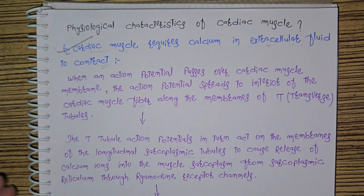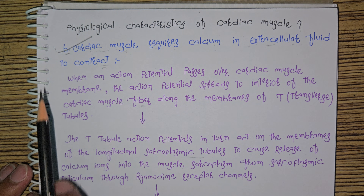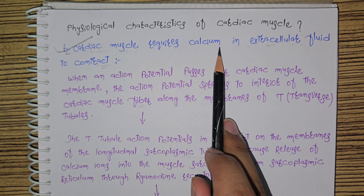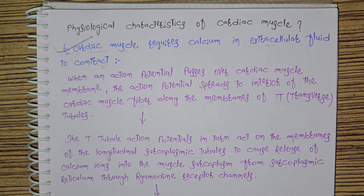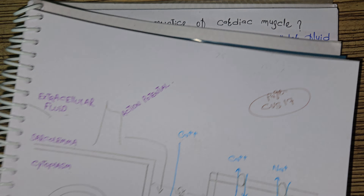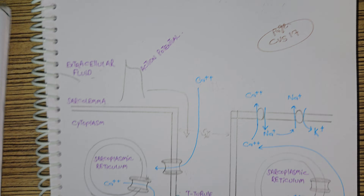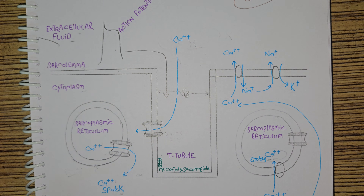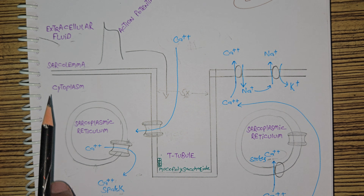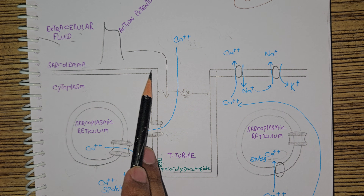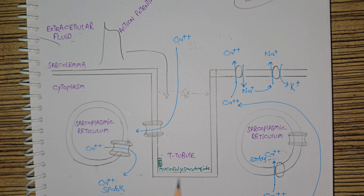Physiological characteristic number 6 states: cardiac muscle requires calcium in extracellular fluid to contract. Now, what does this statement mean? Look at this diagram. This is the diagram of a cardiac muscle cell.